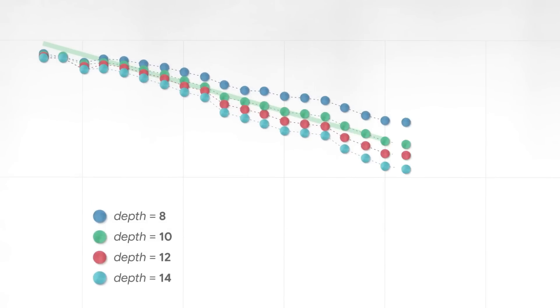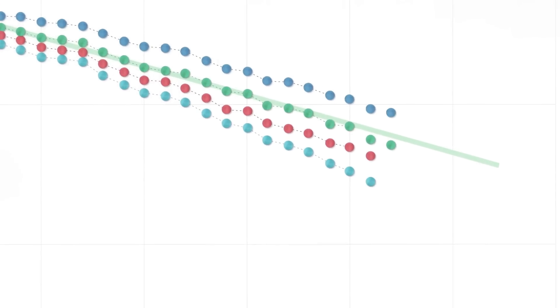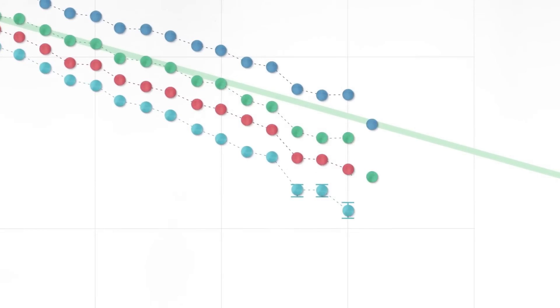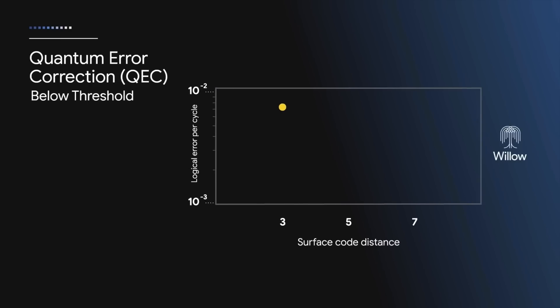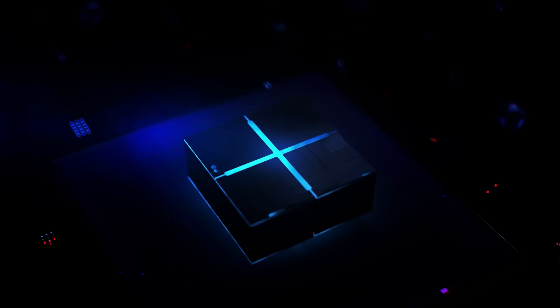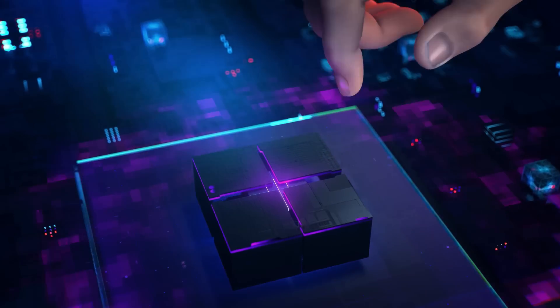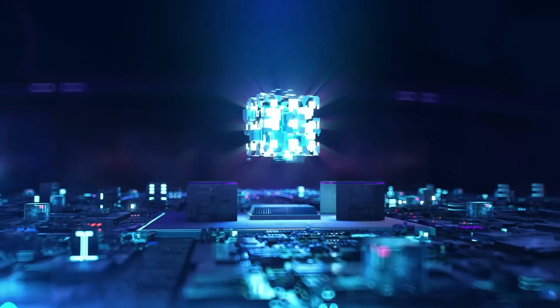Previously, the lack of error correction has been a significant obstacle to scaling quantum systems. But Google believes Willow has solved this challenge. With a new quantum error correction method, Willow could make quantum systems more reliable, enabling them to tackle complex problems and usher in a new era of computing.